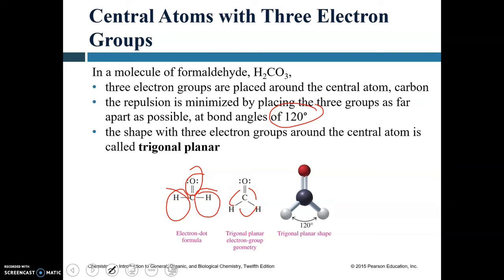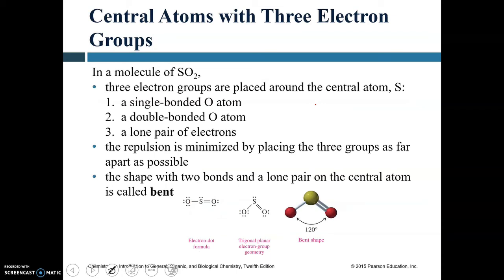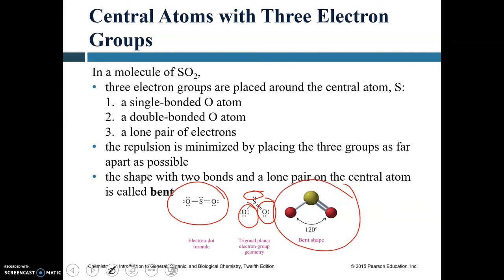In some cases with three electron groups, one of them is a lone pair rather than a bond — as in sulfur dioxide (SO₂), which has two bonds to oxygen and one lone pair. Repulsion is minimized by placing electron groups as far apart as possible. Since we don't represent lone pairs in stick models, the bond angle between sulfur and oxygen appears as approximately 120 degrees, but the molecule is bent rather than linear because of that lone pair electron group.